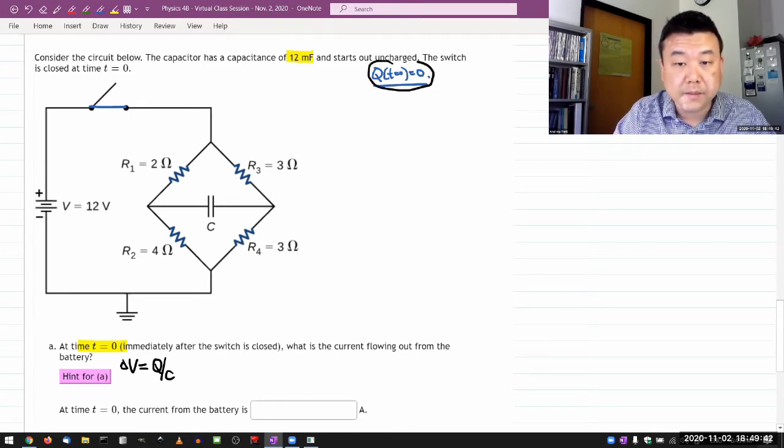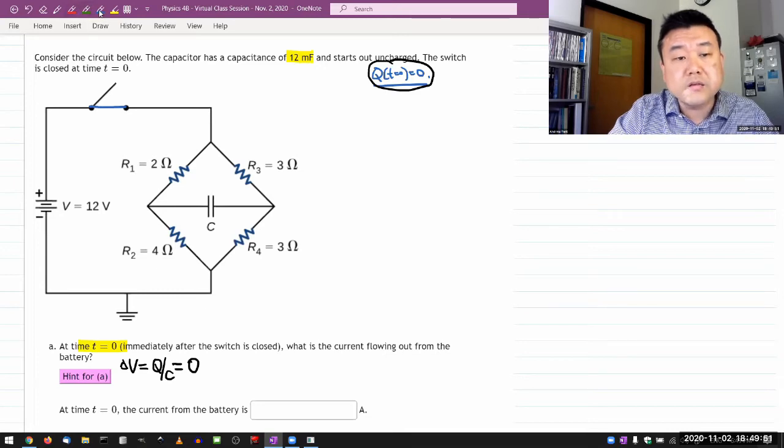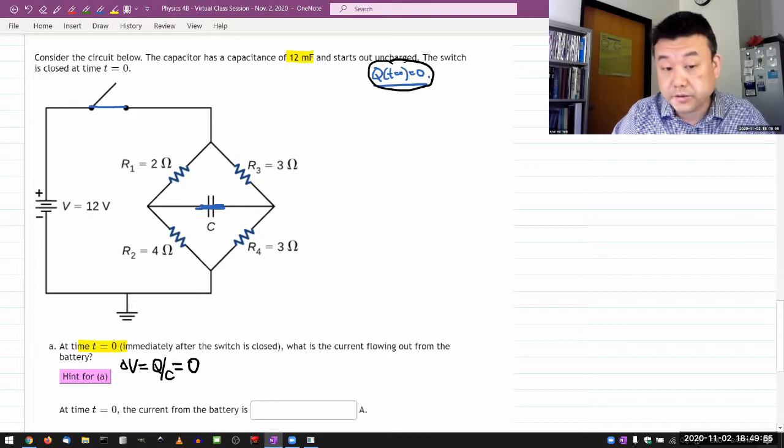At time t equals 0, the amount of charge on the capacitor is 0, which means that the voltage drop across the capacitor is 0. So that allows you to treat the capacitor as though it's a simple wire at this time t equals 0.